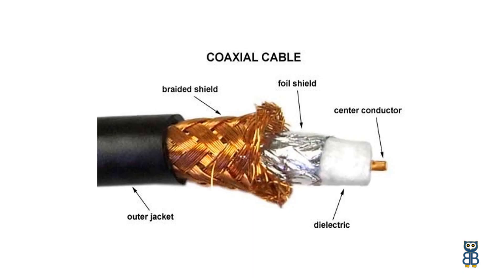Let's understand what a coaxial cable is. This cable contains a conductor, insulator, braiding, and sheath. The sheath covers the braiding, the braiding covers the insulation, and the insulation covers the conductor. It is usually used for DTH or dish connections.